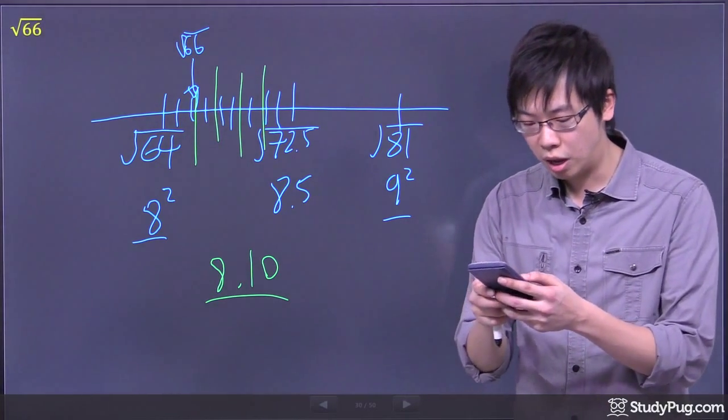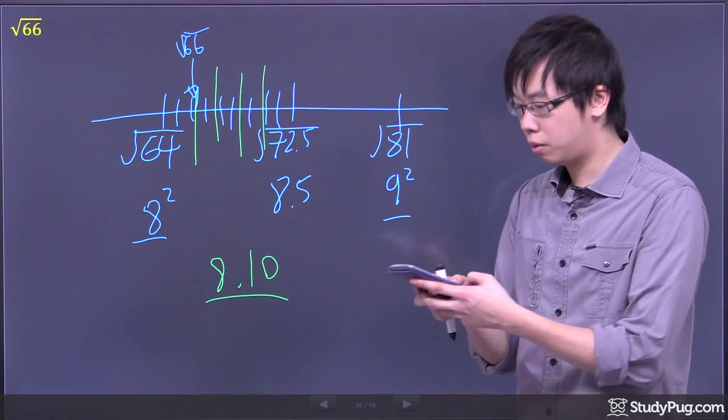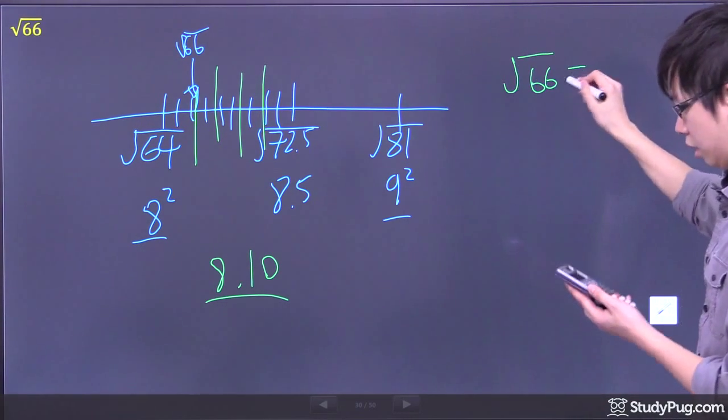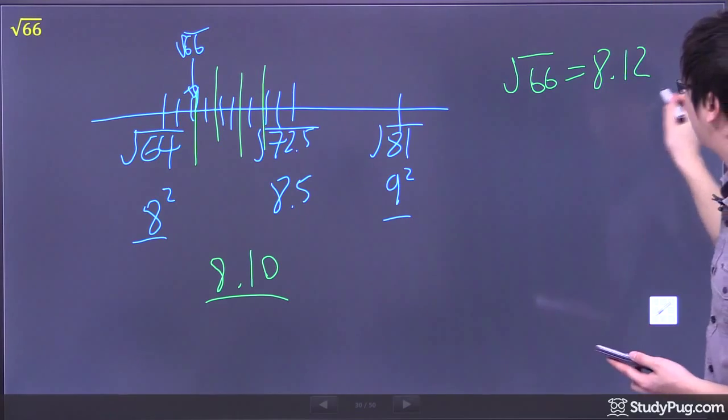Now, if I punch in the calculator, a radical of 66, then I got myself, I'm pretty close actually. It's going to be 8.12.